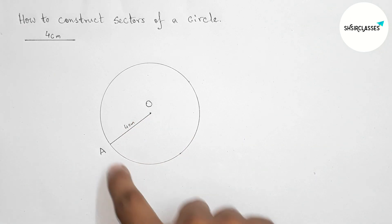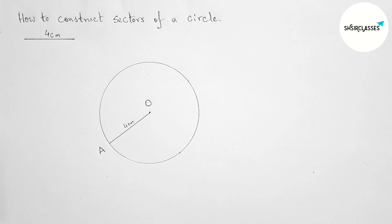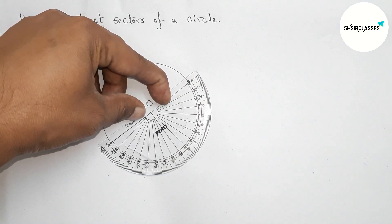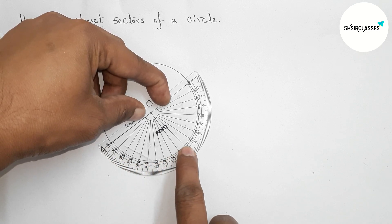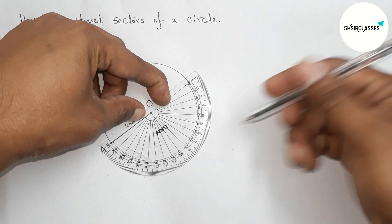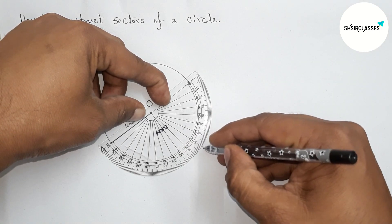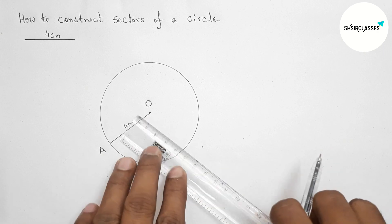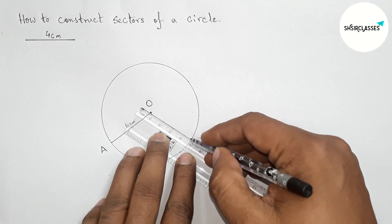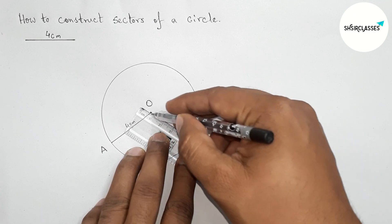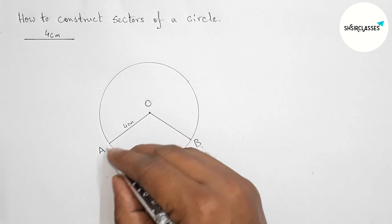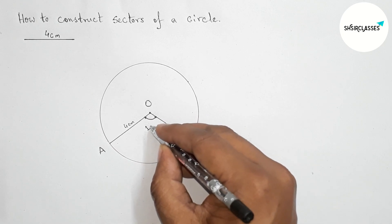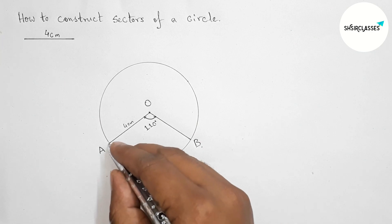Next, drawing an angle on the line OA with the help of a protractor. First, placing the protractor on point O perfectly, then counting the angle — taking angle 110 degrees. This is 110 degrees, which is perfect. Next, joining this line to complete the angle and taking point B here. So angle AOB is 110 degrees.